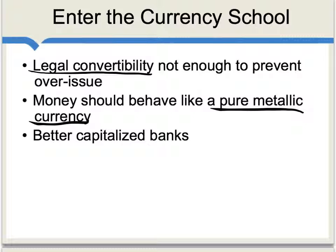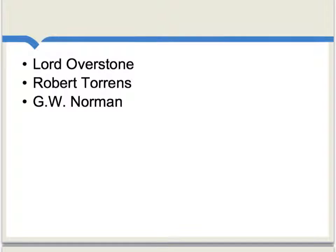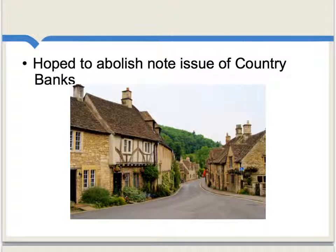Finally, Currency School members believed in what we would now call better-capitalized banks. Overall, this was pretty much a tight money view — it wanted to live with drains of gold by allowing deflationary pressures in the economy, but resist those pressures by having better-capitalized banks. The most influential writers in the Currency School tradition were Lord Overstone, Robert Torrens, and G.W. Norman — Norman working for the Bank of England itself. The Currency School also wanted to limit or abolish the note issue of country banks, and thus have rule-based centralized control over how much money would be created, which the Bank Charter Act of 1844 contributed toward.